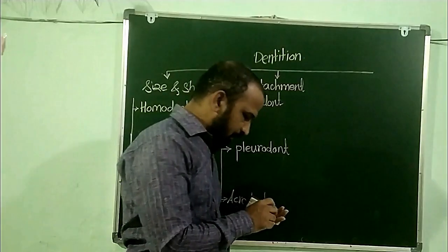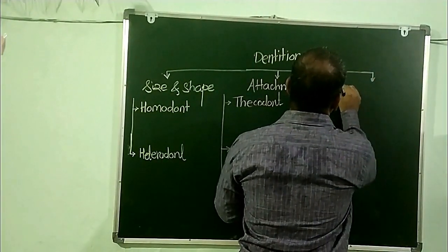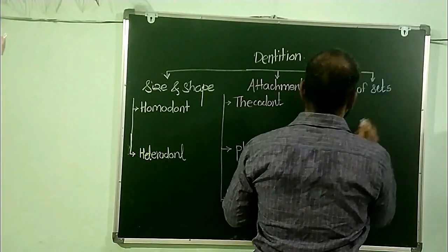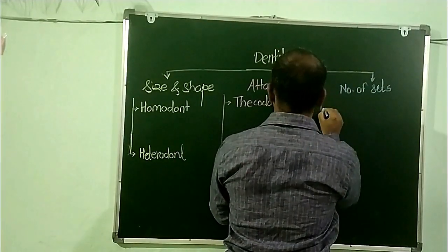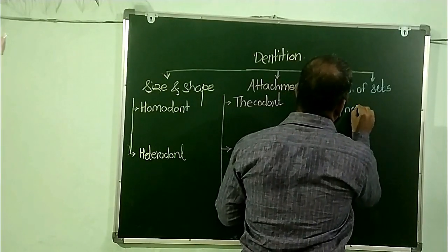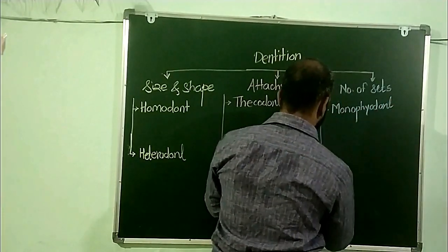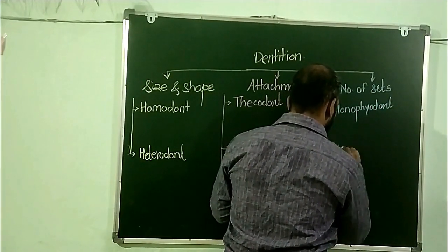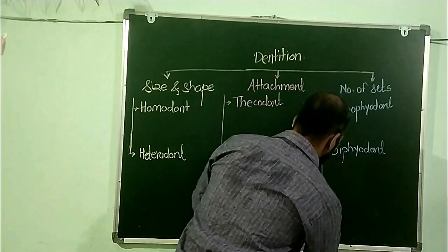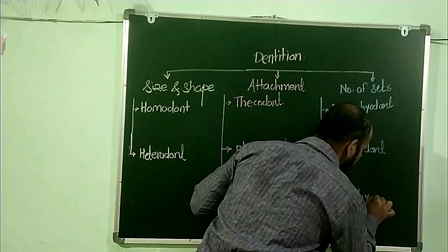The third basis for classification of dentition is the number of sets. Accordingly, dentition is classified into three types. The first one is called the Monophyodont condition, the second one is called the Diphyodont condition, and the third one is called the Polyphyodont condition.